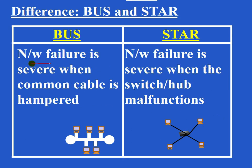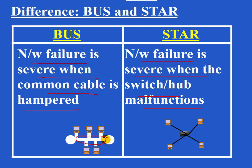Network failure is severe when the common cable is damaged in BUS topology — the entire network comes to a standstill. Similarly, in star topology, network failure is severe when the switch malfunctions, and the entire network also comes to a standstill.